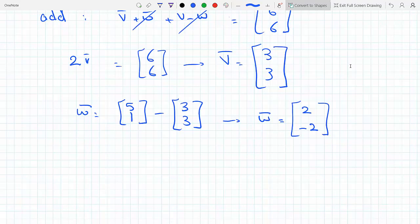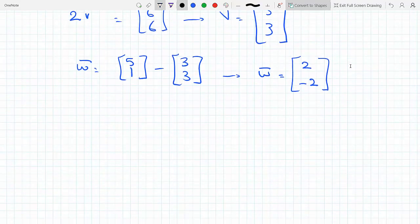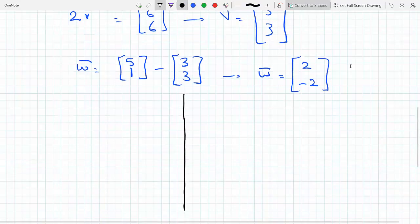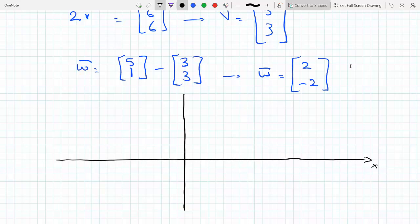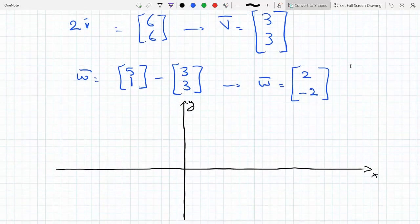And now we just need to graph them. So to graph them, that is straightforward. So let's say that this is the y-axis and this here is the x-axis. Okay, so v is [3,3], so I would go 3 to the right, 1, 2, 3, counting each two squares as 1. So this is my point, and then I would join the origin to that point and this would be the tip of my vector. So this is v.